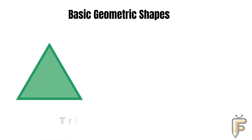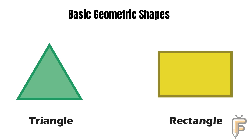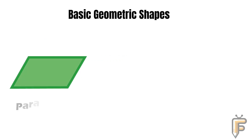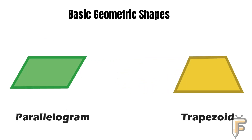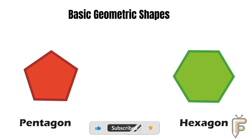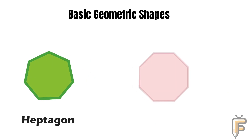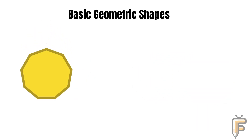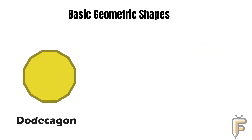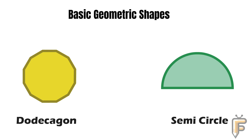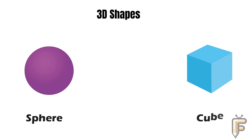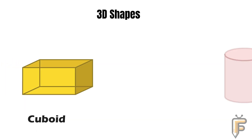Triangle, rectangle, oval, rhombus, parallelogram, trapezoid, pentagon, hexagon, heptagon, octagon, nonagon, decagon, dodecagon, semicircle. 3D shapes: sphere, cube, cuboid, cylinder.